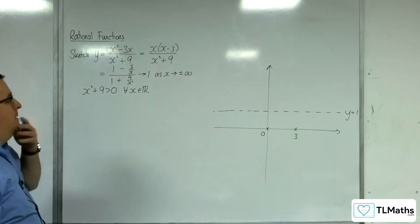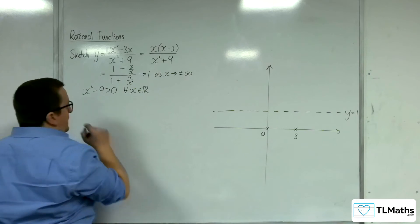All right. Okay. So where does it cross the horizontal asymptote? That would be helpful.